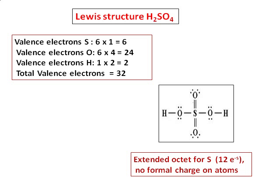If you look at the actual Lewis structure of sulfuric acid shown in another part of the video, it can also form a structure in which the octet rule is satisfied — it has 8 electrons around sulfur — but in such a case it will have formal charges on the atoms. So this is the structure in which the octet is extended but there is no charge on the atoms.